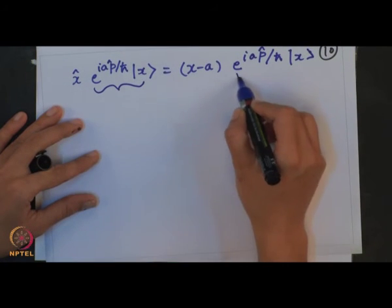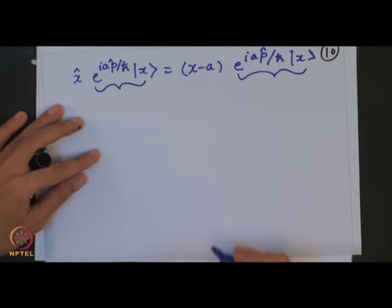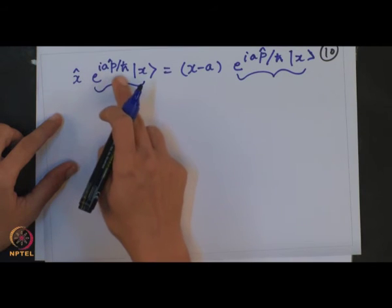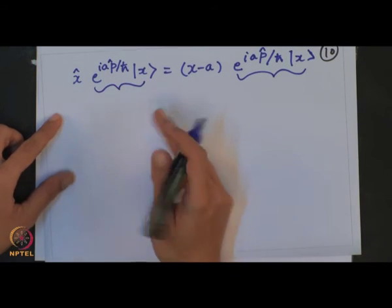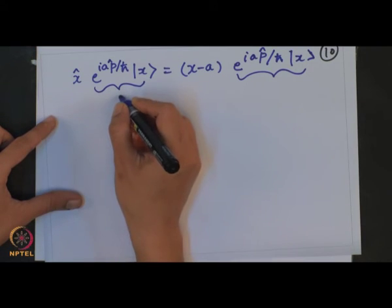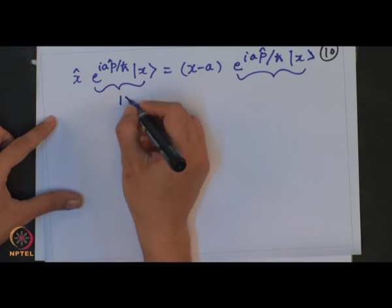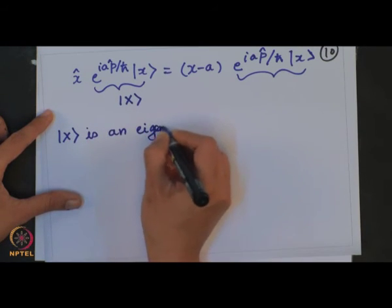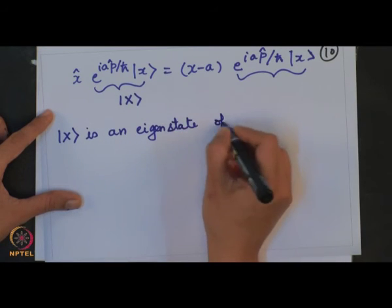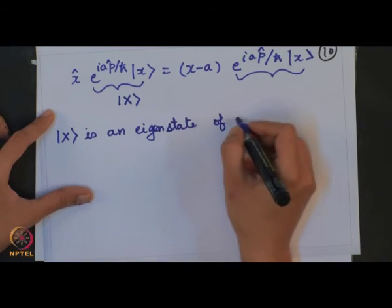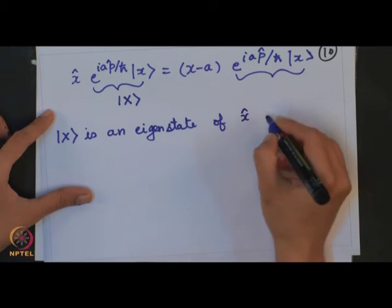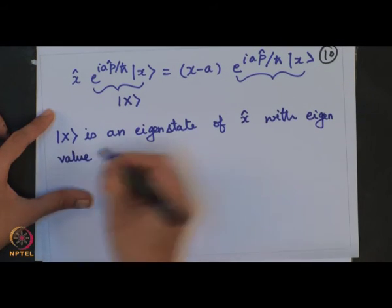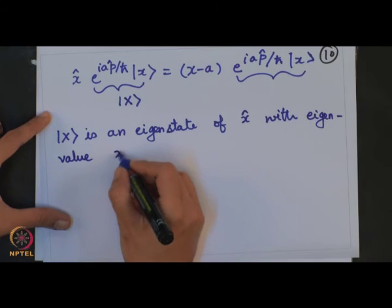So what do we observe? This is some other vector. We obtain that e^(iap̂/ℏ)|x⟩ is an eigenstate. This operator, let me call it capital X, is an eigenstate of operator x̂ with eigenvalue (x − a).